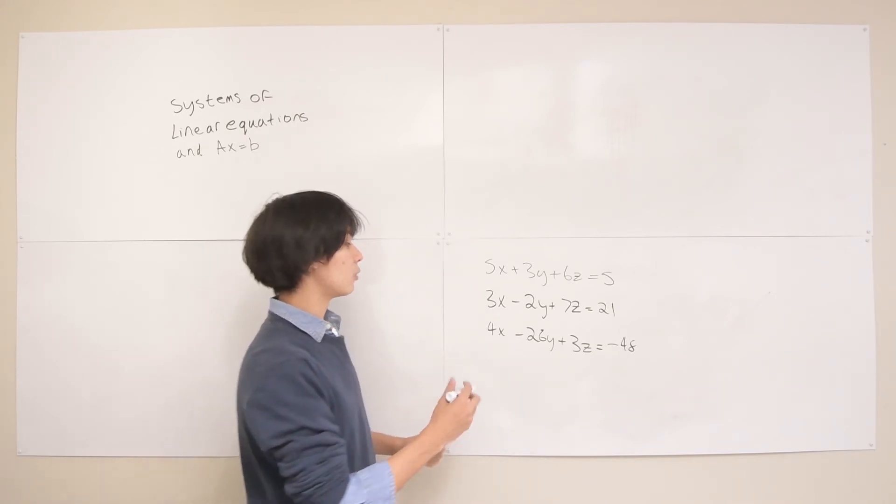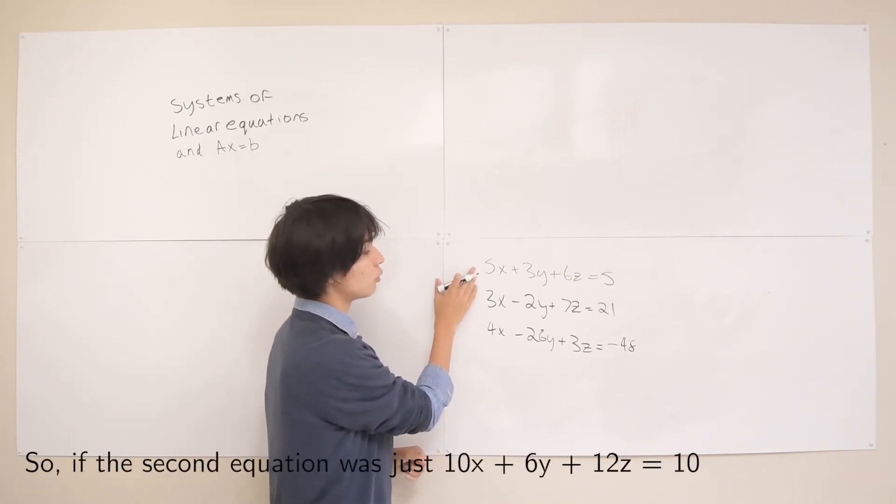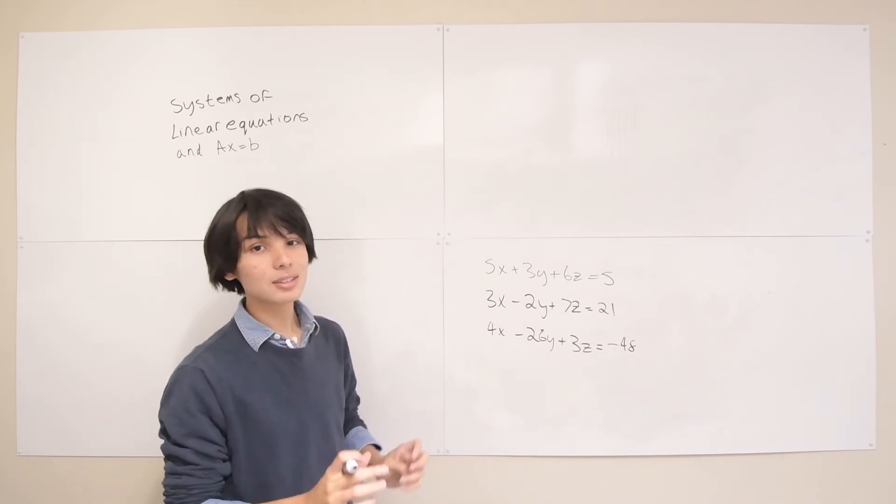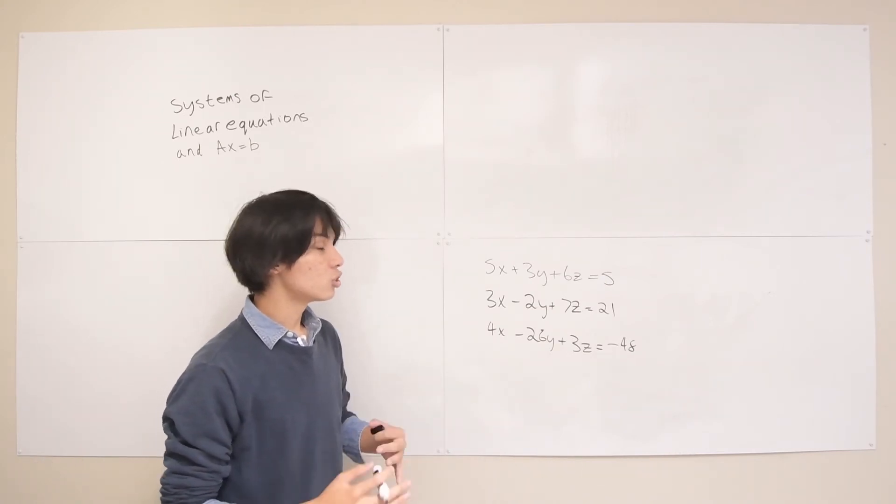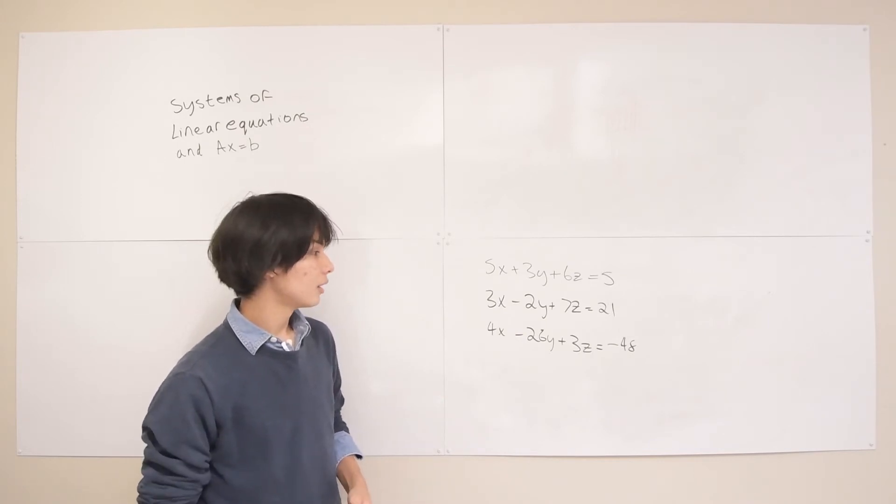So generally if one of the equations is just this equation times 2 then we would really just have the same thing as two equations. But if we had three kind of independent equations and three variables we should be able to solve for those three variables if they don't conflict in any way.